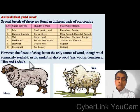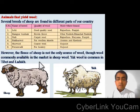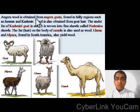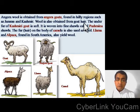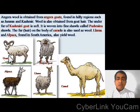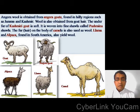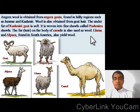The fleece of sheep is not the only source of wool, though wool commonly available in the market is sheep wool. Other animals also yield wool. Yak wool is common in Tibet and Ladakh. Angora wool is obtained from angora goats found in hilly regions such as Jammu and Kashmir. The under-fur of Kashmiri goat is soft and is woven into fine shawls called Pashmiri shawls. The fur hair on the body of camels is also used as wool. Llama and alpaca, found in South America, also yield wool.